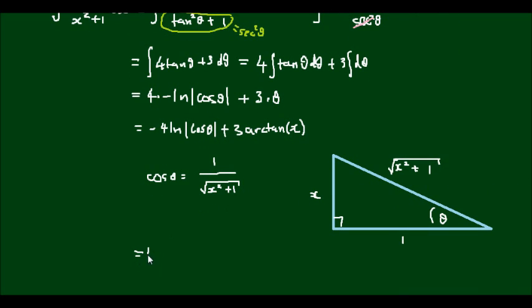So continuing on, I'll write negative 4 times the natural log of 1 over the square root of x squared plus 1, plus 3 arc tan x. Oh, I forgot to put an integration constant plus c here. So better make sure I do that for each integral that I do.